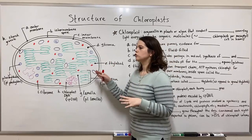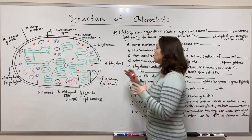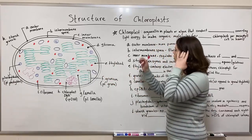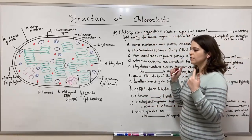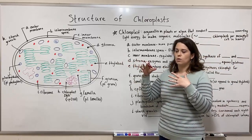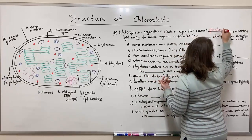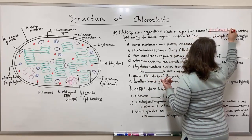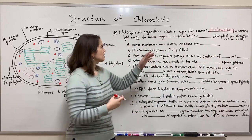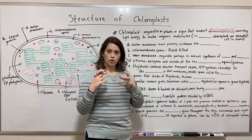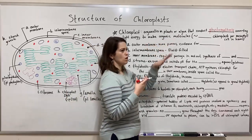Right here on the board I have drawn a basic diagram of a chloroplast. So before we delve into that, what exactly is a chloroplast? Well, a chloroplast is an organelle found in plants or algae — specifically organisms that conduct photosynthesis. Remember that photosynthesis is a metabolic process where light energy is converted into chemical bonds, so that carbon dioxide is fixed to make organic molecules like glucose.